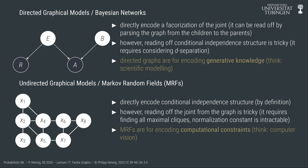As an alternative, we discussed Markov random fields or undirected graphical models—graphs with edges but no directions. These graphs are constructed so that conditional independence structure can be read off directly. However, the price we pay is that reading off the joint probability distribution from such a graph is very complicated and can require potentially complex computations.